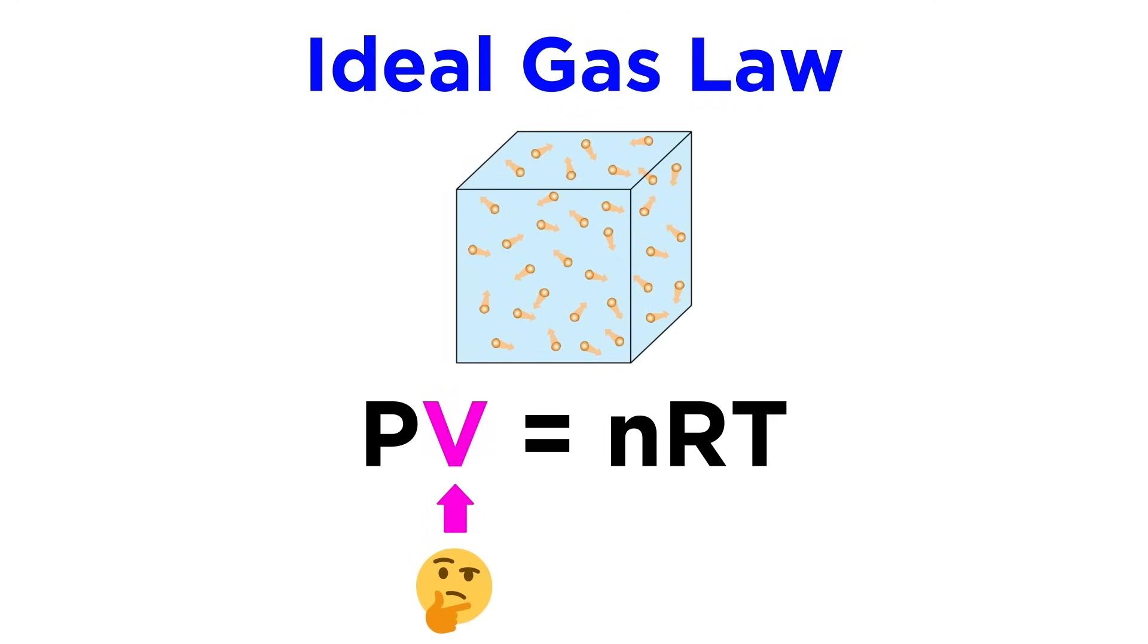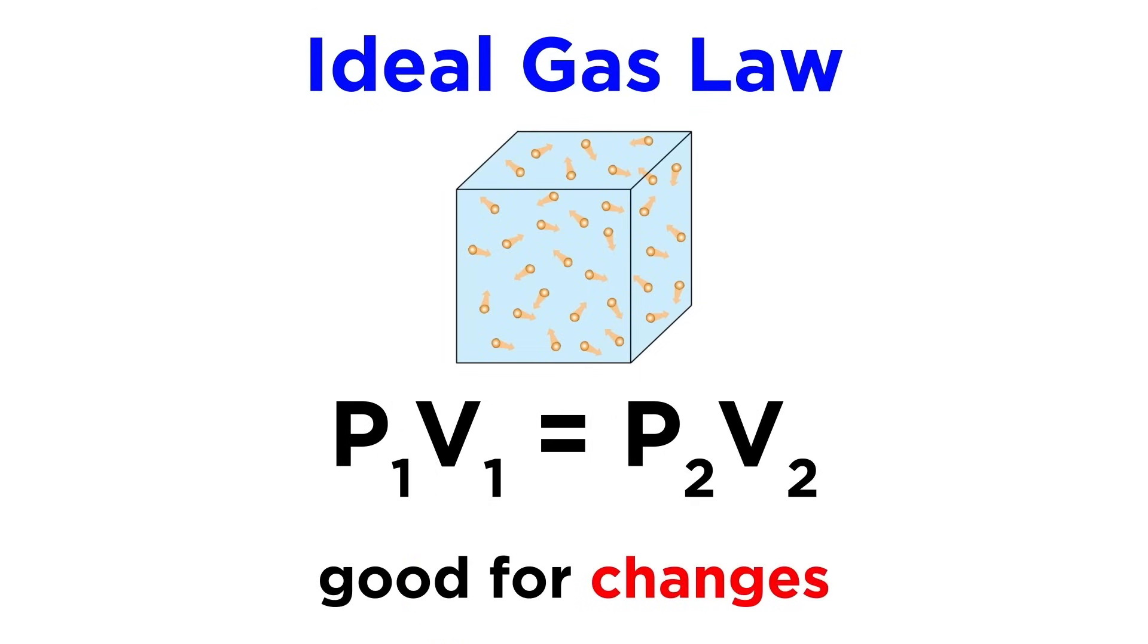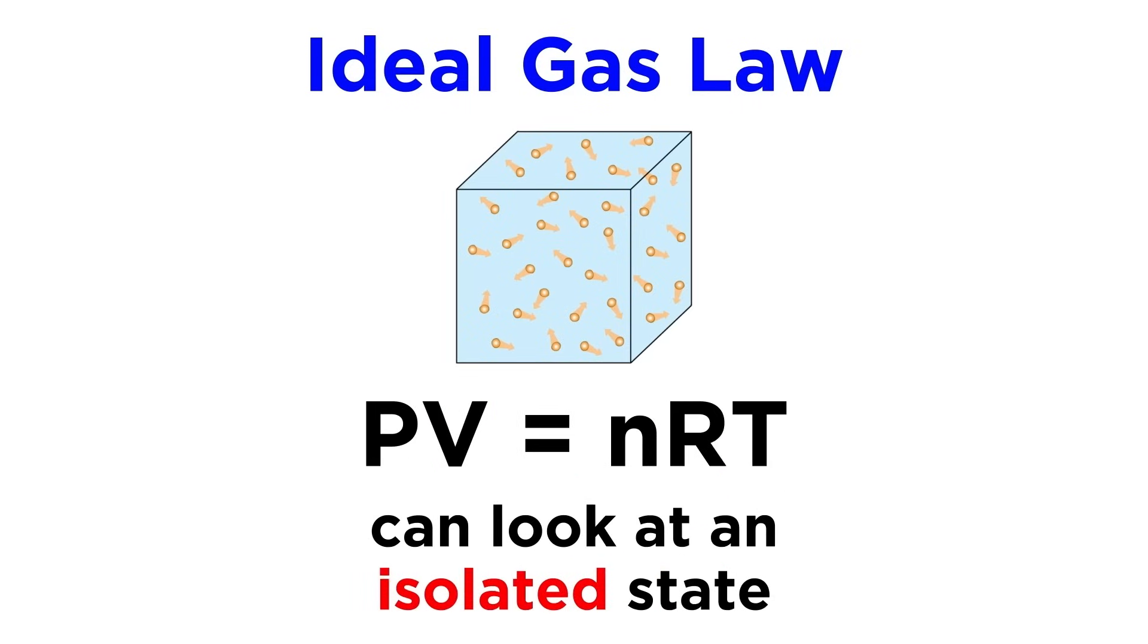The ideal gas law is useful when all of the parameters for a sample of gas are known except one. Rather than the other laws we've learned, where we tend to make predictions about the change in one variable that accompanies the change in another variable, we can look at an ideal gas in an isolated state and calculate any parameter for that gas.